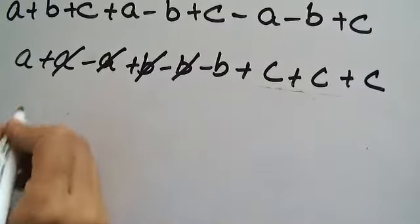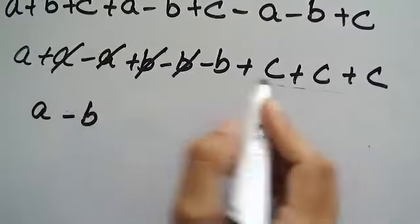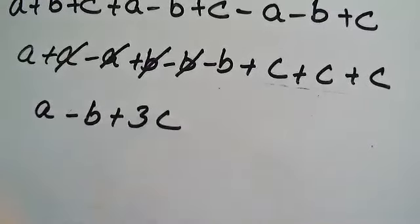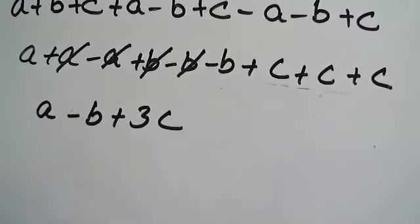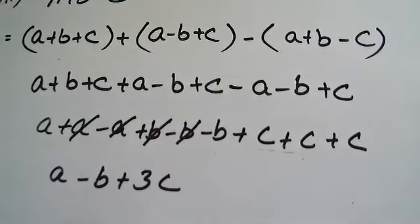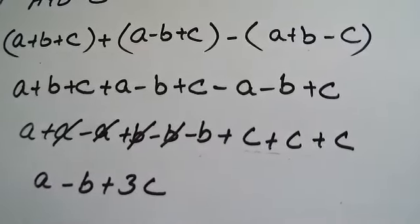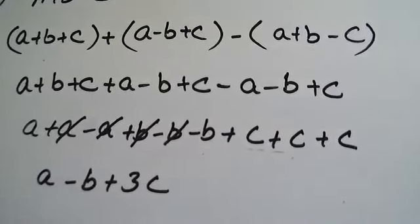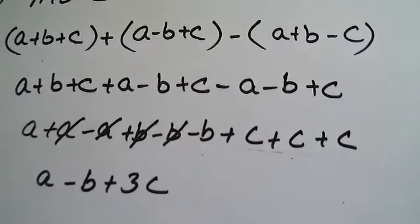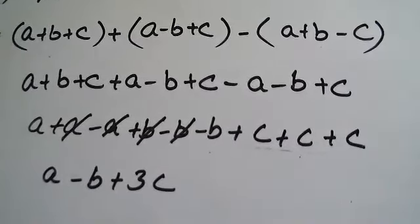The remaining terms are written here: A minus B, and it will be plus. Part number 7 is complete. Parts 8 and 9 are put in the home assignment — they are solved in the same way.